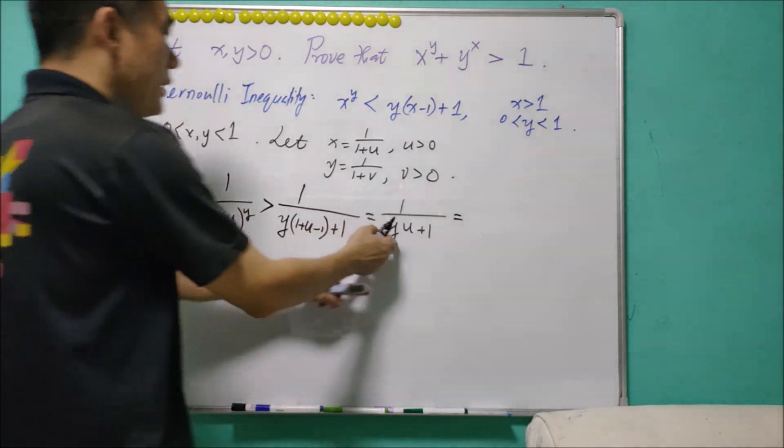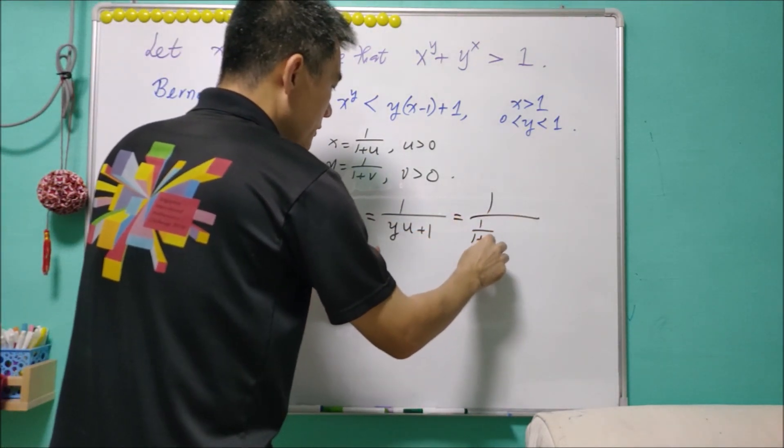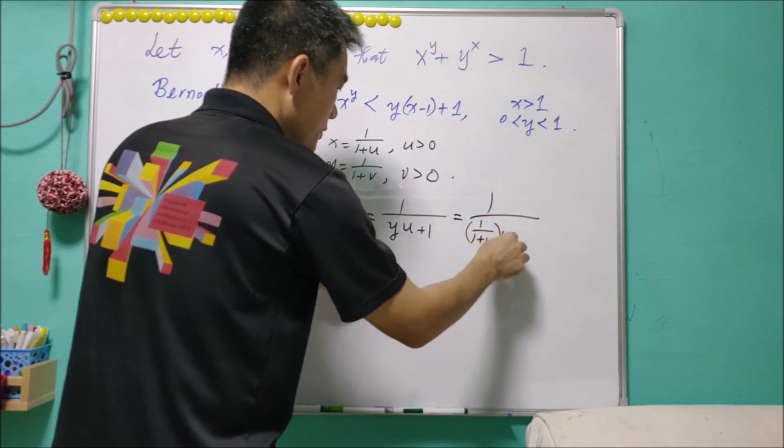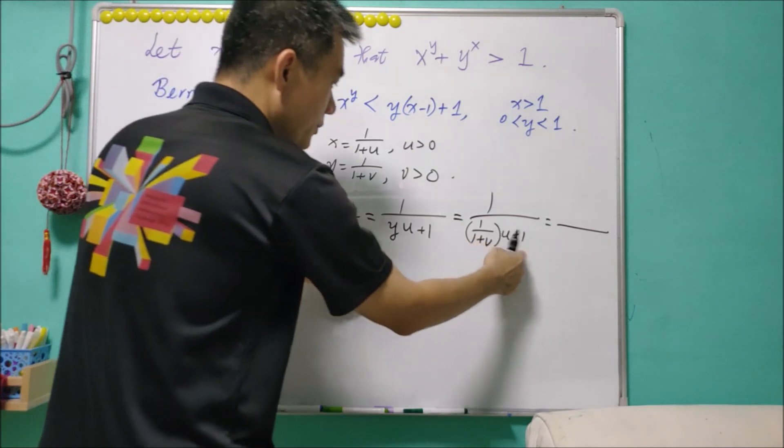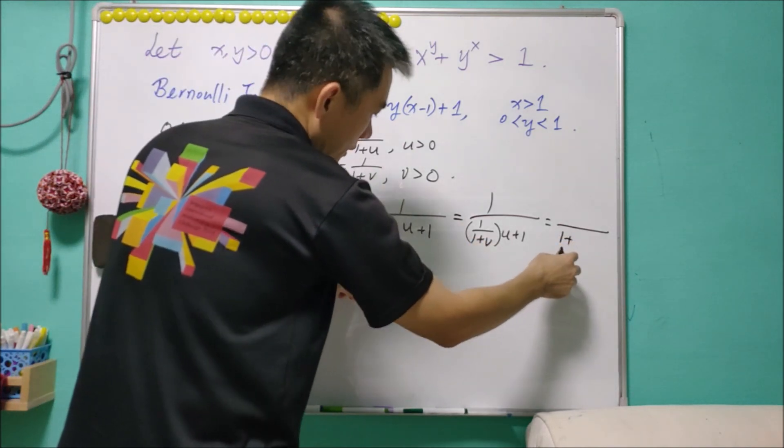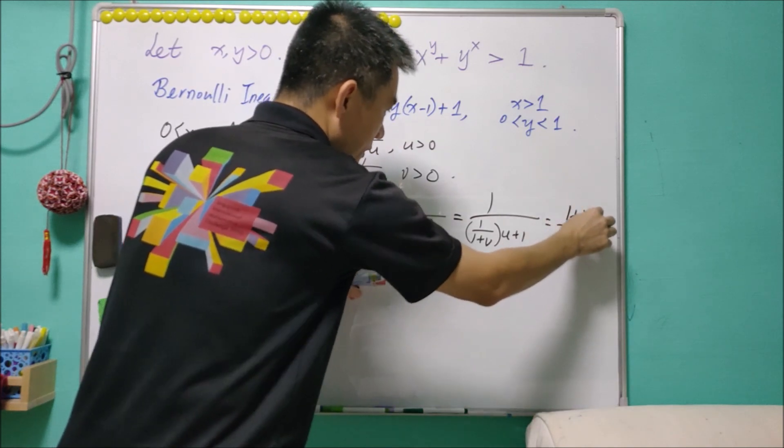But what is y? y equals 1 over (1 plus v). So 1 over (1 plus v) times u plus 1. And after we combine it, this will be equal to (1 plus v) over (1 plus u plus v).